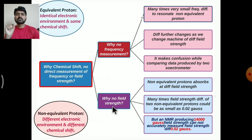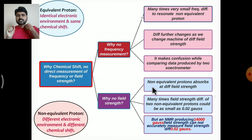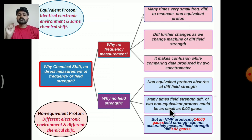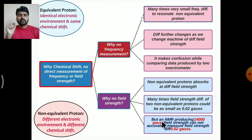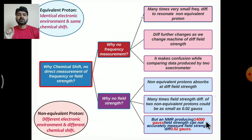Another possibility would be to measure the field strength required to resonate the proton, but this is also not done. Non-equivalent protons do absorb at different field strengths, but many times this field difference is very small — it could be as small as 0.02 gauss. An NMR instrument producing 14,000 gauss or more cannot accurately measure a difference of 0.02 gauss, so we cannot develop any scale to determine the field strength for different protons.